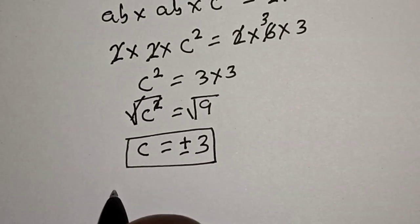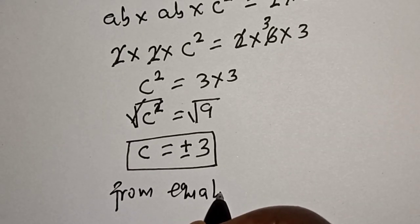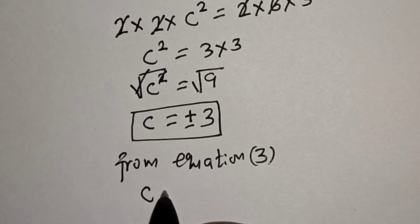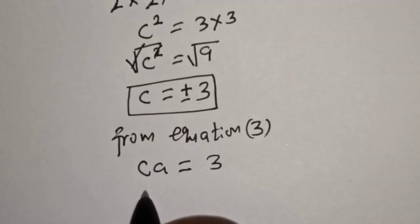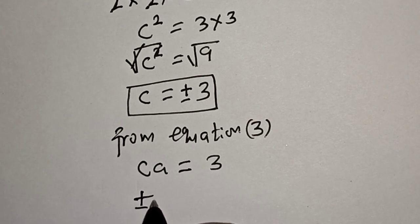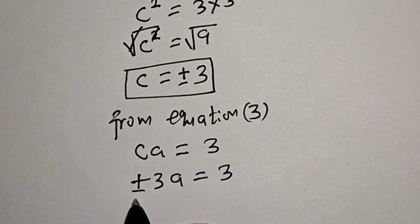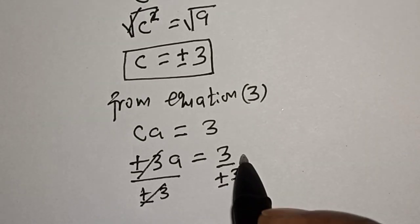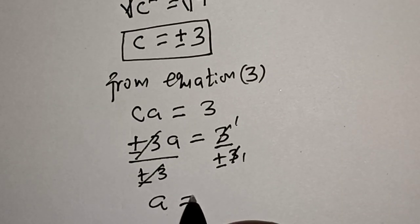Then from equation 3, CA is equal to 3. We know C is plus or minus 3, so plus or minus 3 multiplied by A is equal to 3. Now let's divide both sides by plus or minus 3, and A is equal to plus or minus 1.